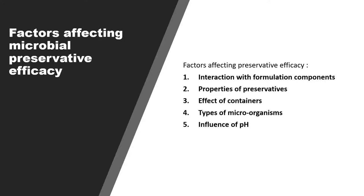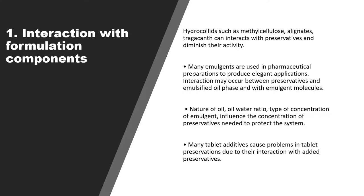Now let us understand the factors which affect microbial preservative efficacy. These include interaction with other formulation components, properties of the preservatives, effect of the container closure system, type of microorganisms against which protection is required, and the influence of pH. Hydrocolloids such as methylcellulose or alginate can interact with preservatives and diminish their activity. Many emulsifiers used in pharmaceutical preparations can also interact with preservatives; the nature of the oil, oil-water ratio, and type and concentration of emulsifier all influence the concentration of preservatives needed. Tablet adjuvants may also cause problems in preservation due to their interactions with added substances.